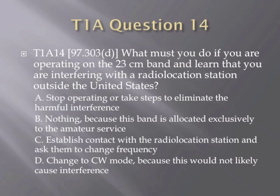Question 14. What must you do if you are operating on the 23-centimeter band and learn that you are interfering with a radio location station outside the United States? A. Stop operating or take steps to eliminate the harmful interference. B. Nothing, because this band is allocated exclusively to the amateur service. C. Establish contact with the radio location station and ask them to change frequency. Or D. Change to CW mode because this would not likely cause interference.